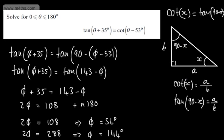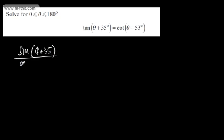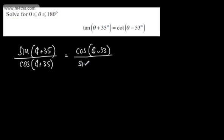An alternative approach to this question would be to rewrite tan and cot in terms of sines and cosines. So we can write sine of theta plus 35 over cos of theta plus 35, and set that equal to cos of theta minus 53 degrees over sine of theta minus 53 degrees.